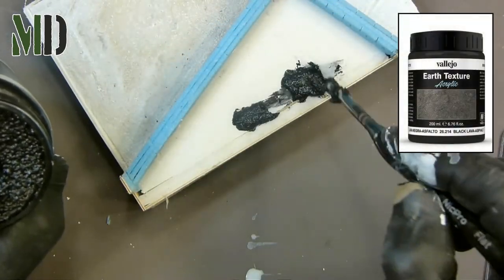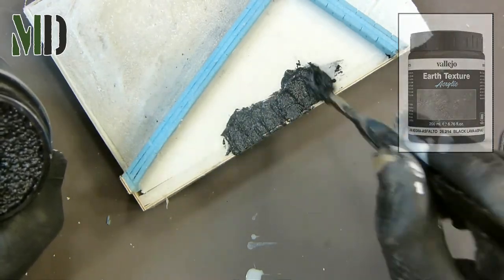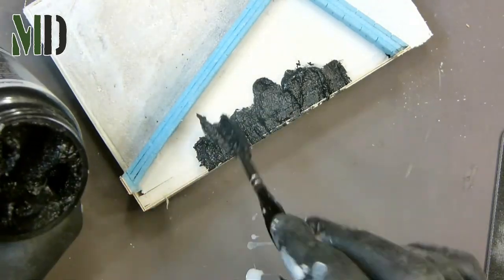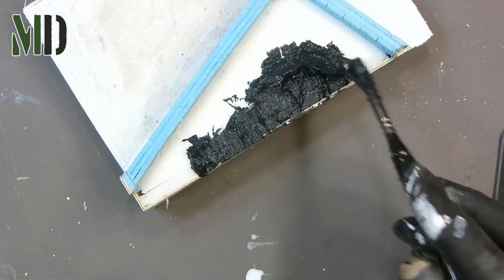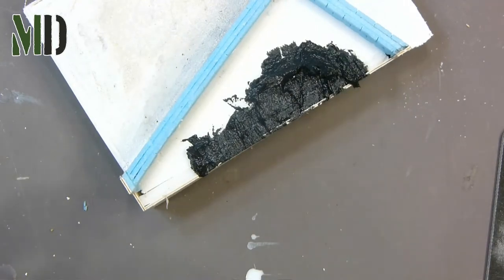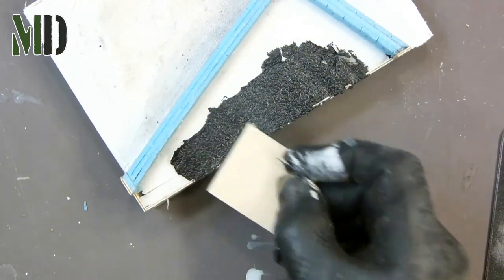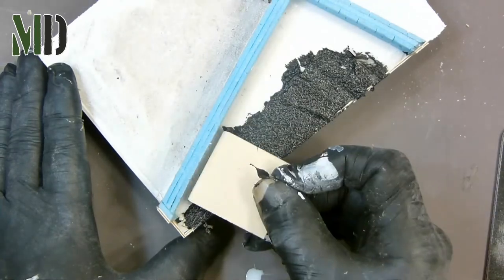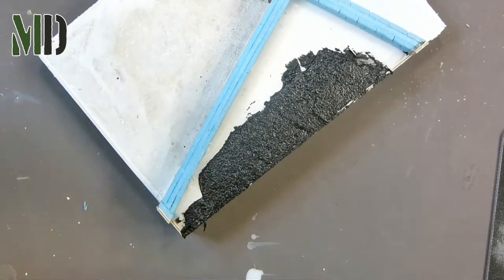Next I use a Vallejo paste which is for tarmac, and it's 26214. I've never used it before, but it looks quite nice in a jar. And after I'd applied it with a brush it looked quite good, it does look like asphalt or tarmac. Just apply it with a brush and then I spread it out with a piece of balsa wood, trying not to get it on the edges. You can clean it off with water as it's an acrylic paste.